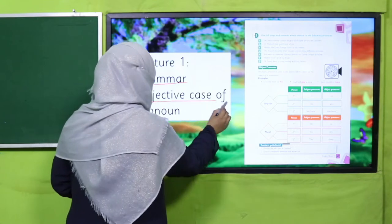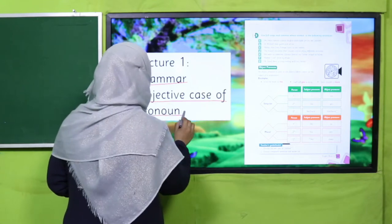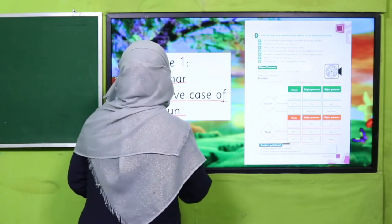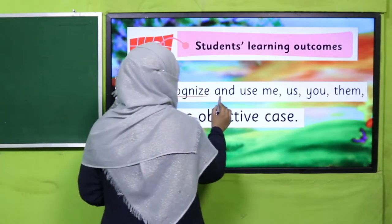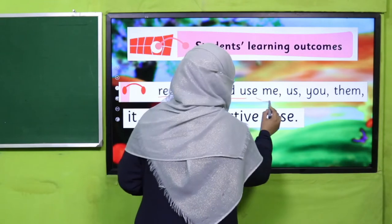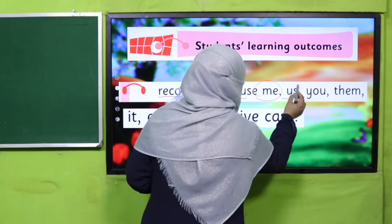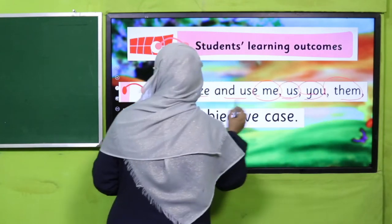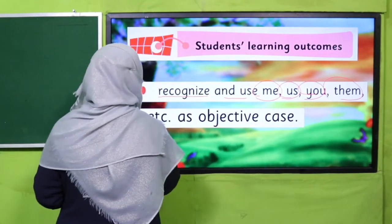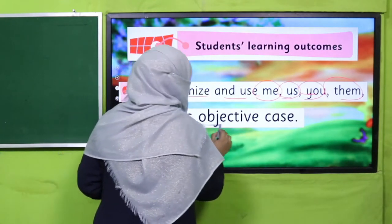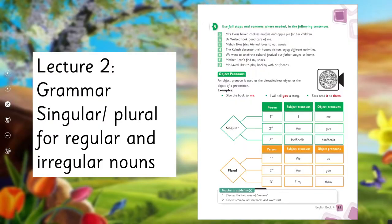We'll cover the SLO to recognize and use me, us, you, them, it, etc. as objective case. In Lecture 2, under the title of grammar, we'll learn about singular and plural for regular and irregular nouns.